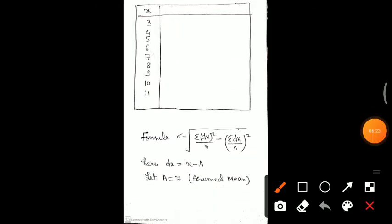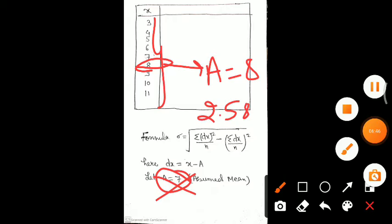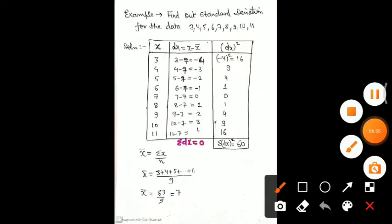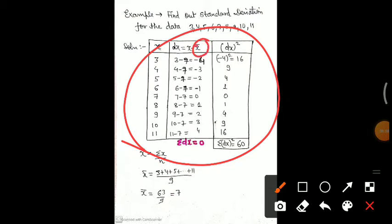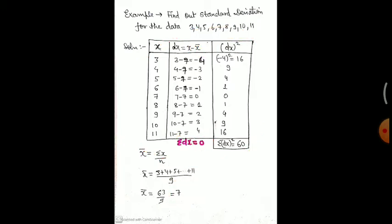To differentiate the two processes, I am considering a not equal to 7. I am taking assumed mean a equals 8. I want to prove that whichever value you consider as assumed mean, you will still get the same answer 2.58. If you had taken a equals 7 — same as x̄ — you would get the same previous table, and putting summation dx equals zero into the shortcut formula gives the same result.